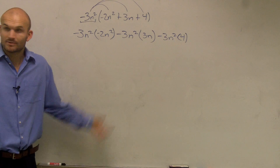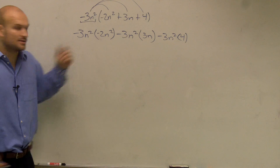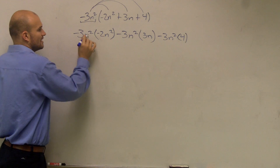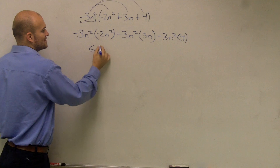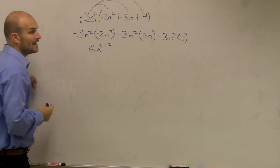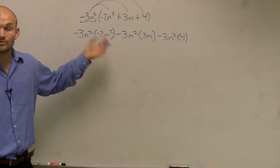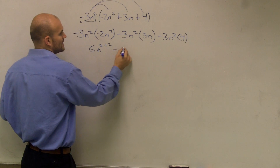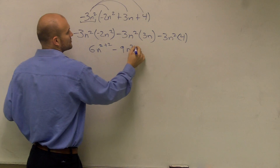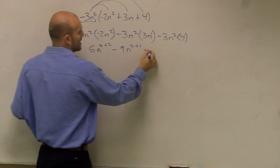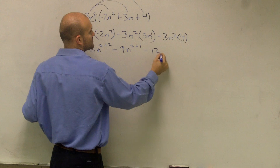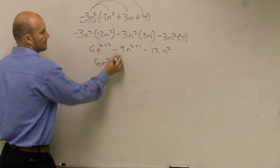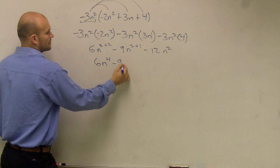Now, multiply monomials — this is what we first learned. You multiply the numbers: negative 3 times negative 2 is positive 6. n squared times n squared is n to the 2 plus 2, which is n to the fourth. Then negative 3 times 3 is negative 9, with n squared times n to the first — that's 2 plus 1, so n cubed. And negative 3 times 4 is negative 12, with n squared.